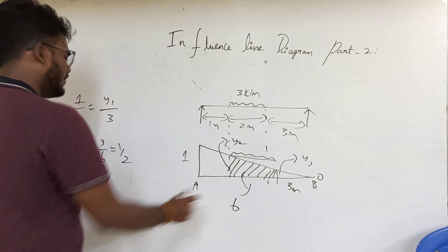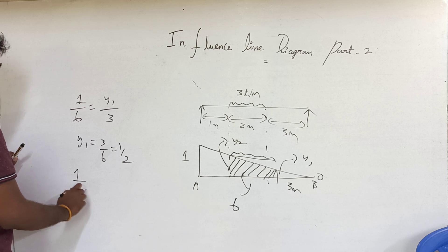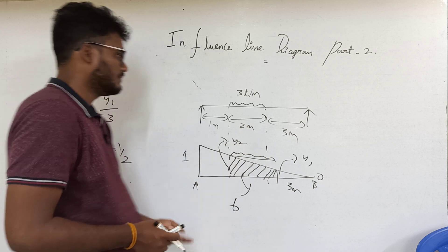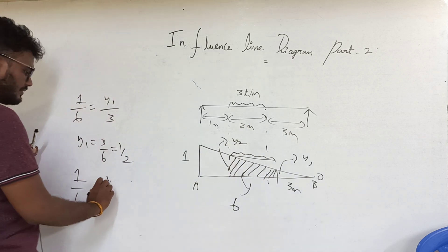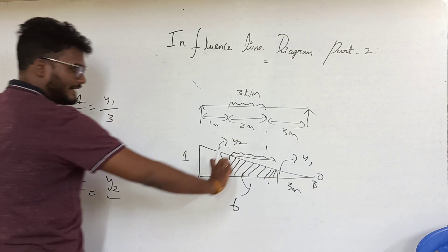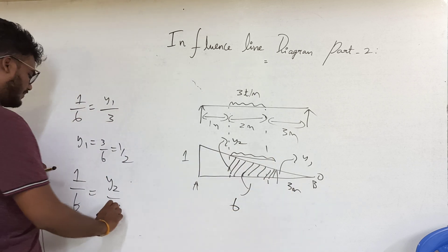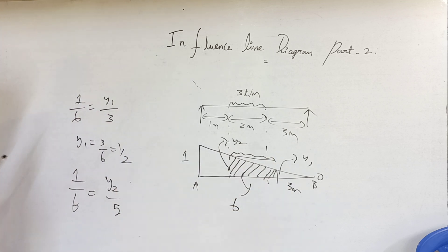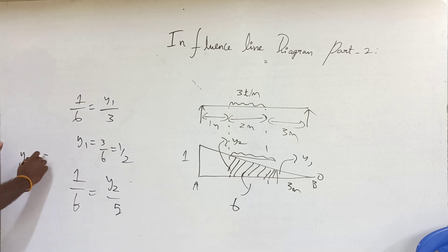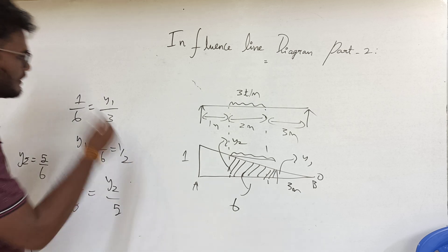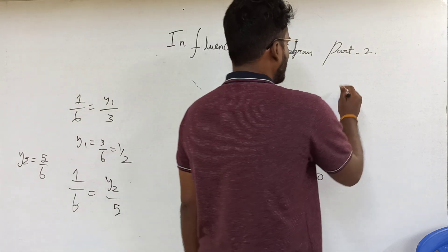Similarly, to find Y2: 1 for 6. Y2 is the ordinate for a distance of 3 plus 2 equals 5 meters. So Y2 by 5 equals 1 by 6, which gives Y2 equal to 5 by 6. So Y1 is equal to 1 by 2 and Y2 is equal to 5 by 6.